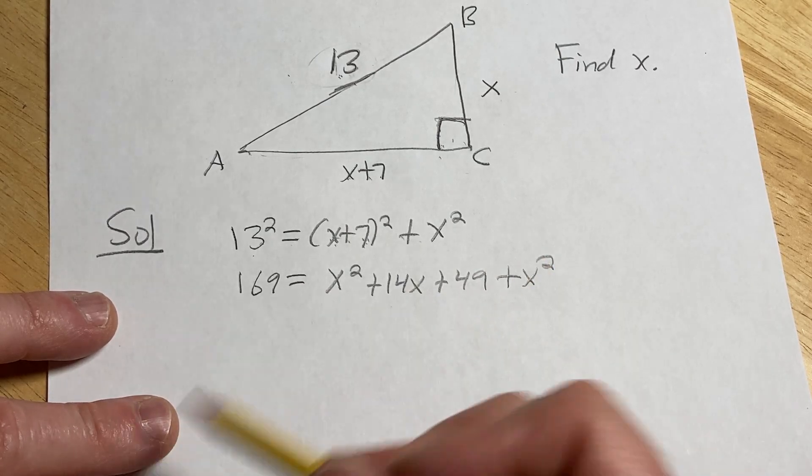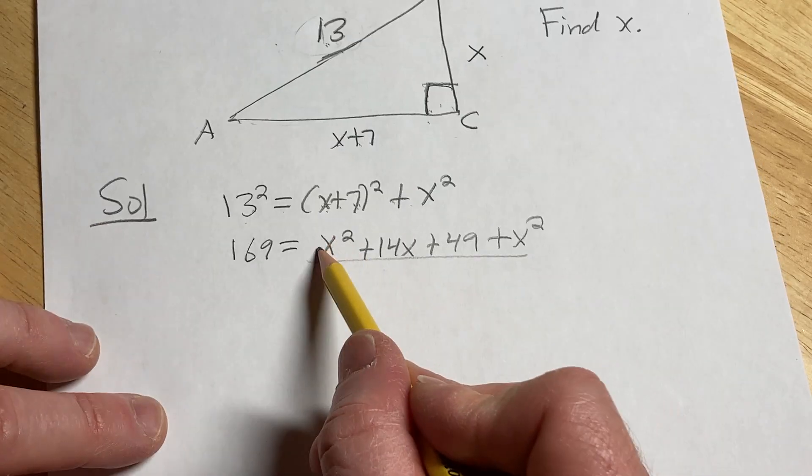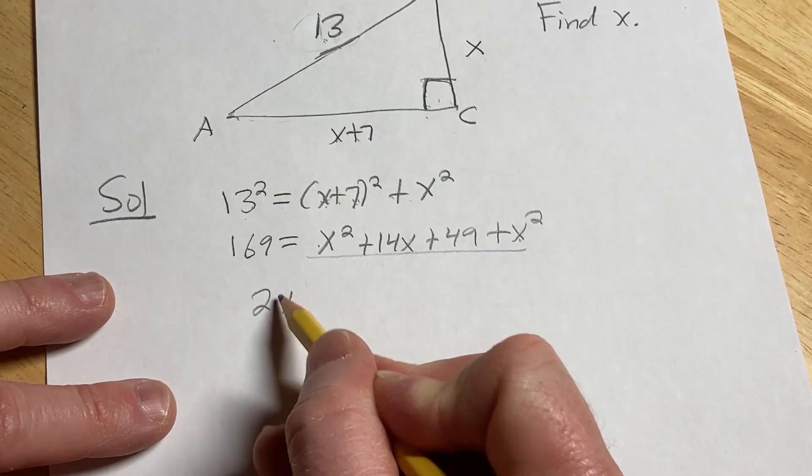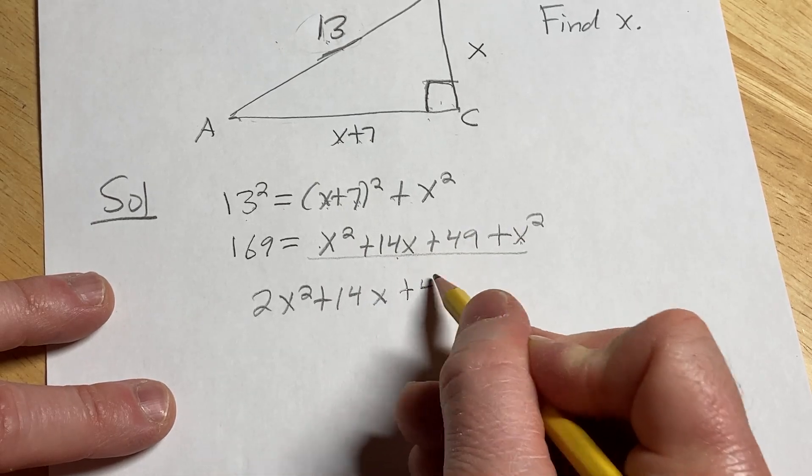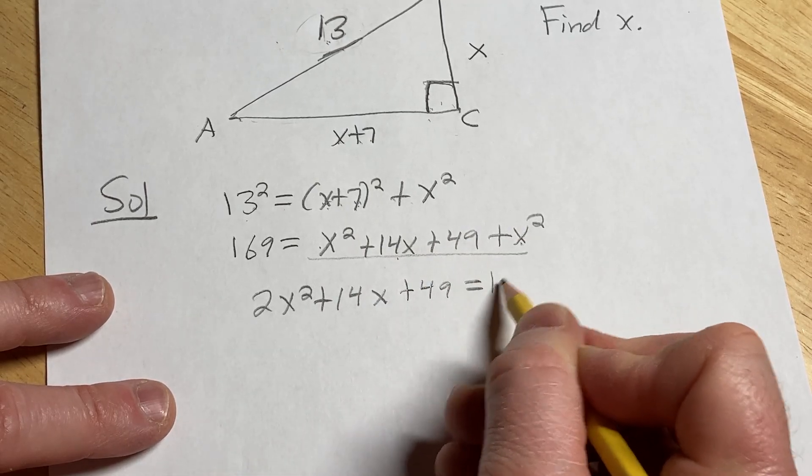Let's go ahead and combine like terms and move all this stuff over here on the left. x squared plus x squared is 2x squared plus 14x plus 49 equals 169.